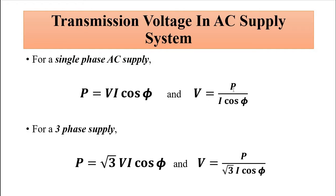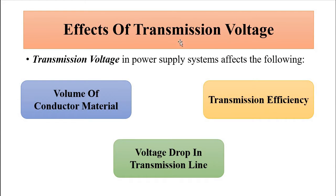The transmission voltage can be expressed as V = P / (I·cosφ). For a three-phase supply, the useful power is P = √3·V·I·cosφ, and the transmission voltage can be expressed as V = P / (√3·I·cosφ). We have covered the conductor size parameter, so here we'll discuss how transmission voltage affects transmission efficiency and voltage drop across the line.